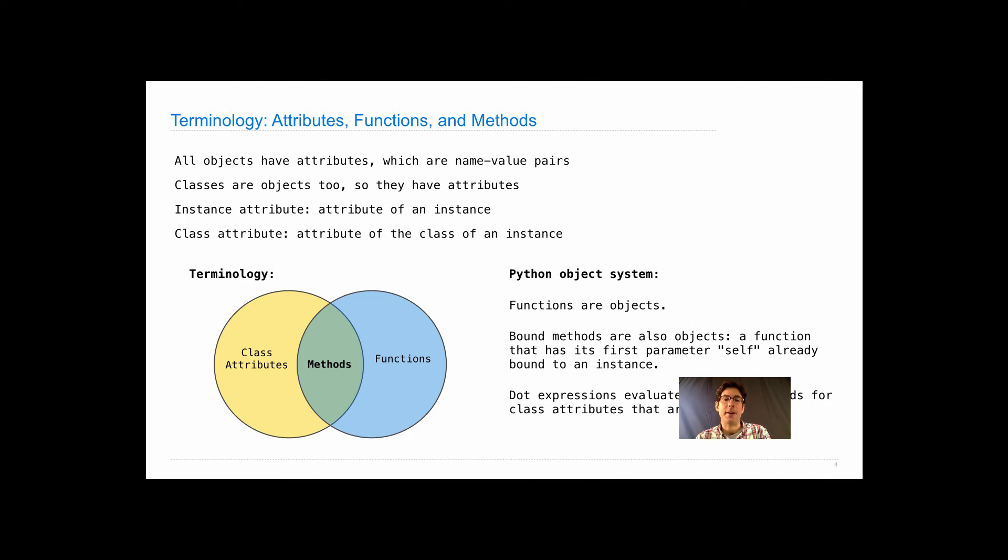Dot expressions evaluate to bound methods when you have a class attribute that's a function. This is a very common pattern where you have some instance before the dot and after the dot you have a method name. Then that method is the function with the instance filled in as the self parameter.